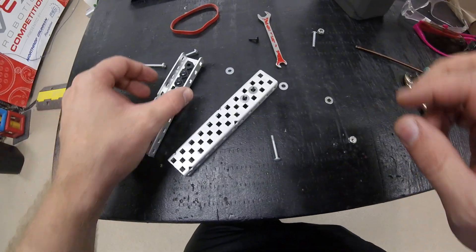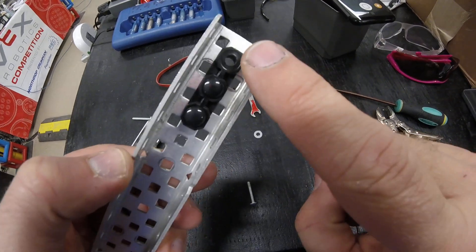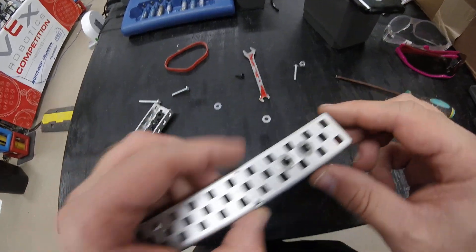Alright, what we're going to do is create a frictionless joint. If you'll notice, we already have our flat bearings with our pop rivets and metal washers in.